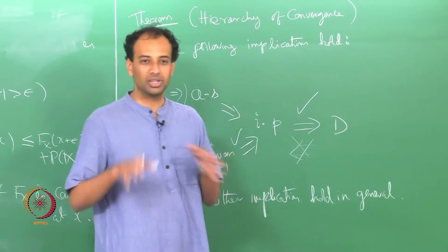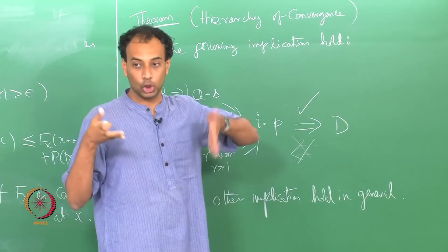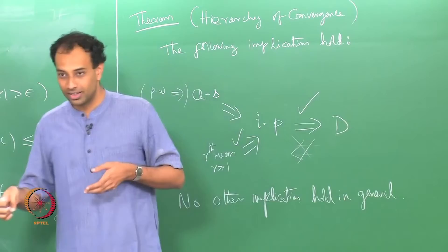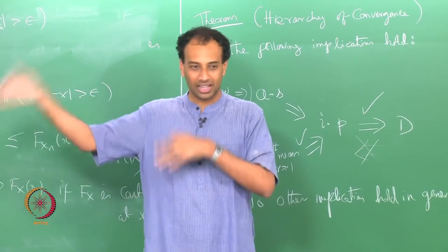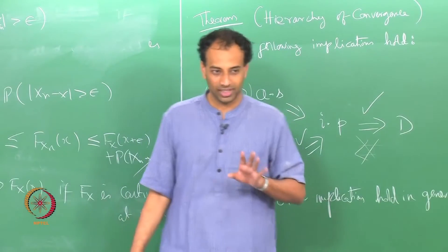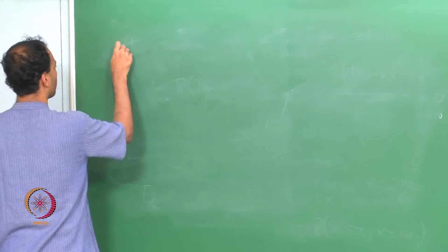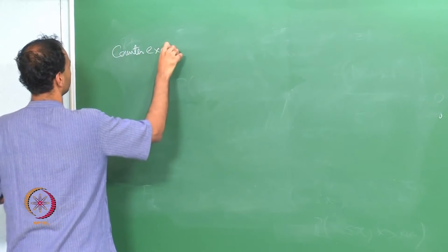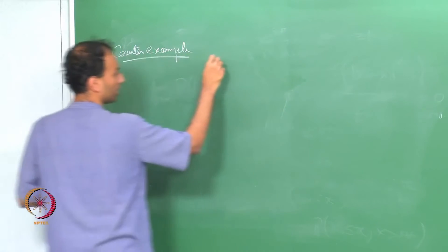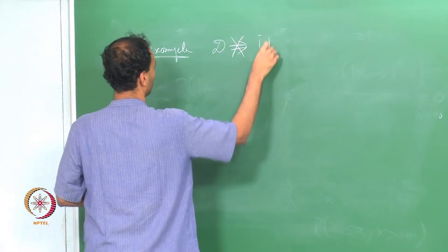Whereas convergence in probability means the probability of X_n and X being very close is close to 1 — or rather, the limit of the probability of the difference exceeding any epsilon is 0. So here is a counter-example to show that convergence in distribution does not imply convergence in probability.